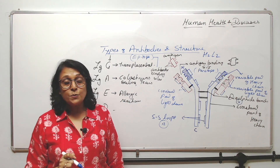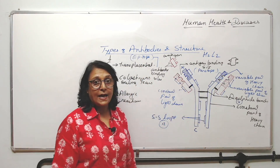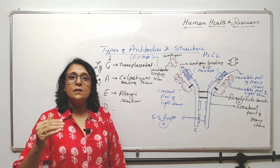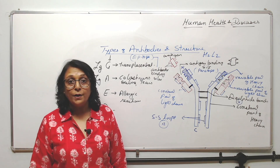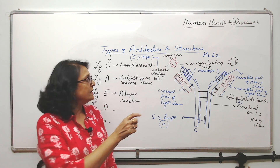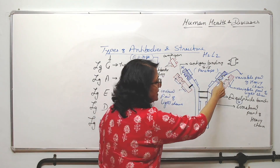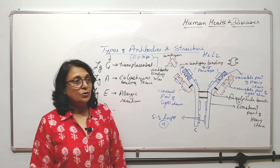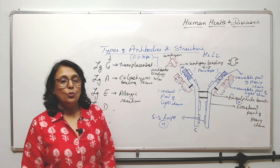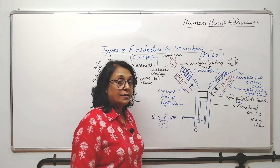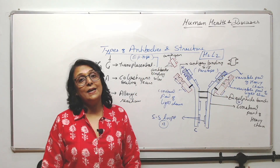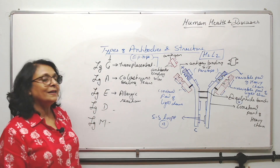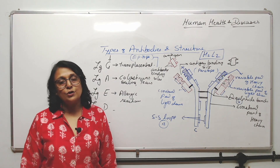So this is a typical antibody. Antibodies are specific because they have specific binding sites. The difference between different antibodies is that their variable parts keep changing. Remember it is H2L2 — two heavy chains and two light chains — and where the C terminal and N terminal are. Questions have been asked on the structure of antibodies and the types: which are transplacental, which are present in colostrum, and so on.